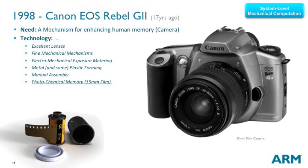Getting much closer to real time now — 17 years. I guess even most of you were alive when cameras looked like this. A camera, looked at in an abstract way, is a mechanism for enhancing your memory. The technology back in 1998 was excellent lenses, fine mechanical mechanisms, electro-mechanical exposure control, metal and some plastics, manual assembly — these were assembled by lots of ladies sitting in large clean rooms — and photochemical memory, which we call film for simplicity.